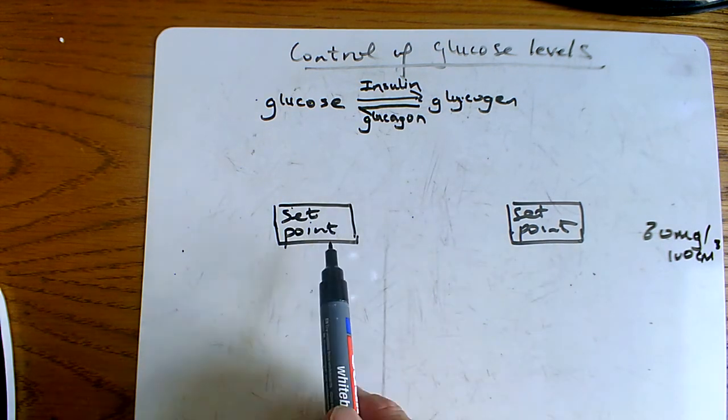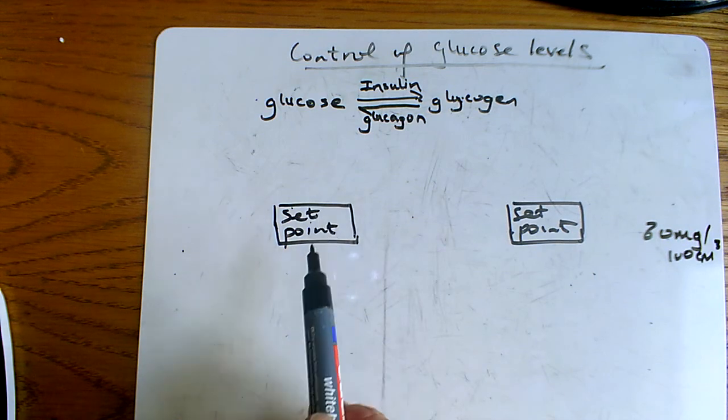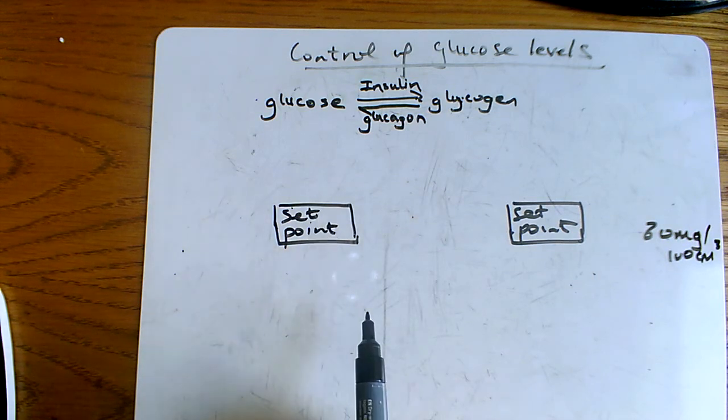And if you deviate from that point, if you go up or down from that point, if you get too much glucose in your blood, that can be a problem. If you've got too little glucose in your blood, that will be a problem as well.